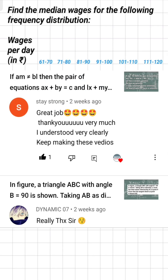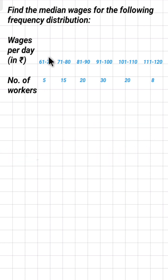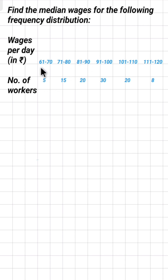Find the median wages for the following frequency distribution. Wages in rupees and number of workers are given. The wage classes are: 61 to 70 (first class), 71 to 80 (second class), 81 to 90 (third class), and so on. The number of workers are 5 for the first class, 15 for the second class, and 20 for the third class. This means five workers earn between 61 to 70 rupees daily, 15 workers earn between 71 to 80 rupees, and 20 workers earn between 81 and 90 rupees.